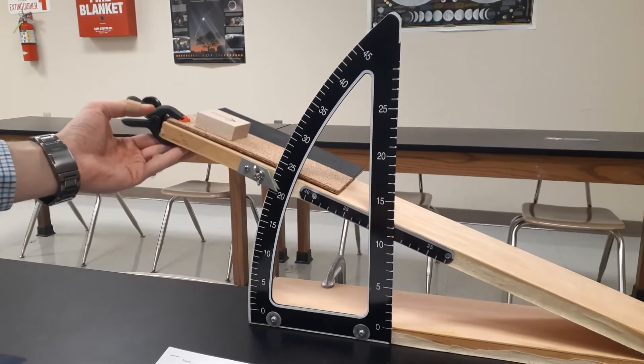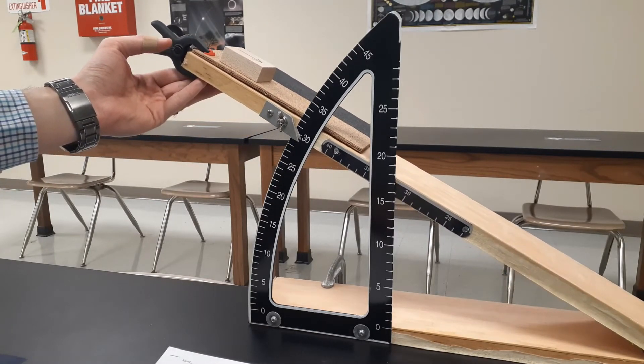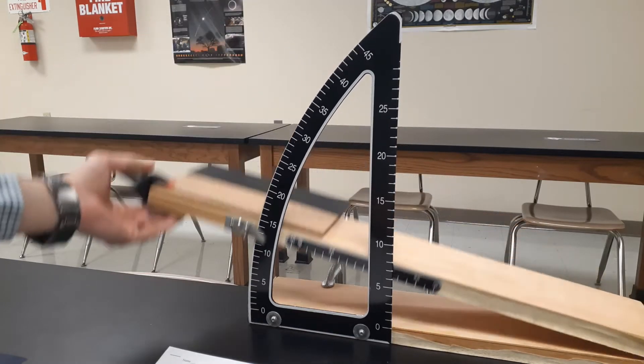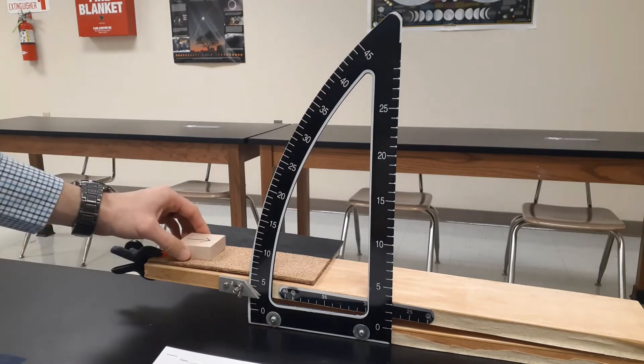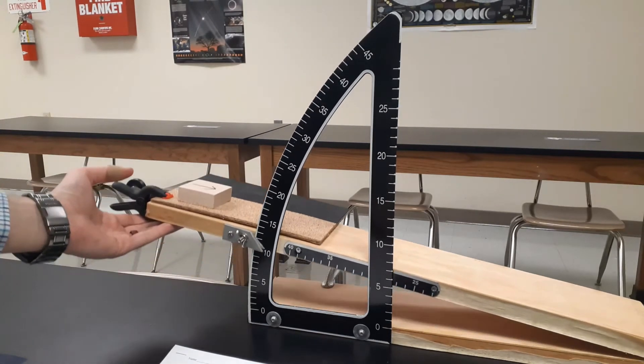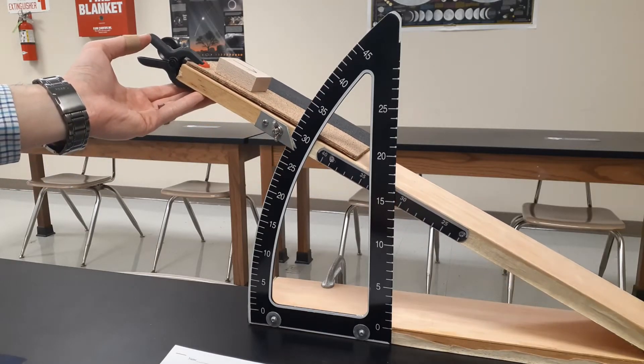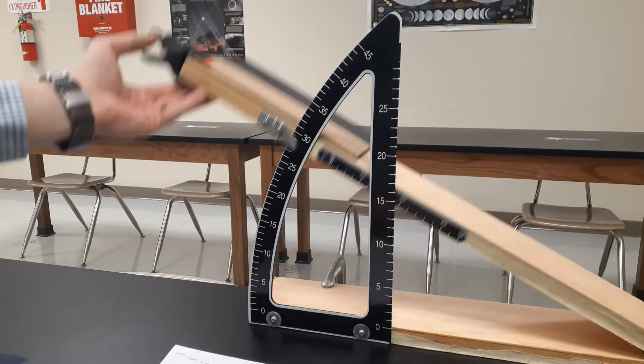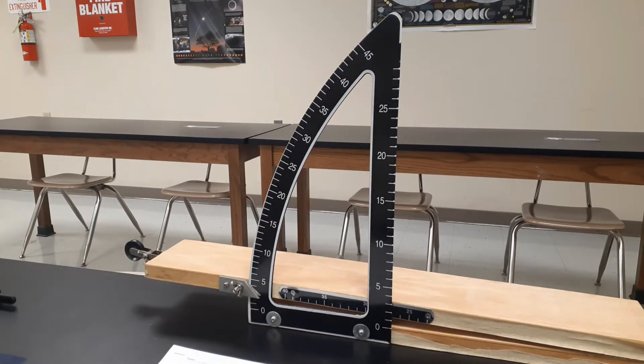Trial number two for the corkboard. Work my way up here. 32 degrees for corkboard trial two. And then one more for the corkboard. 32 degrees. So 32 degrees was the final one for cork.